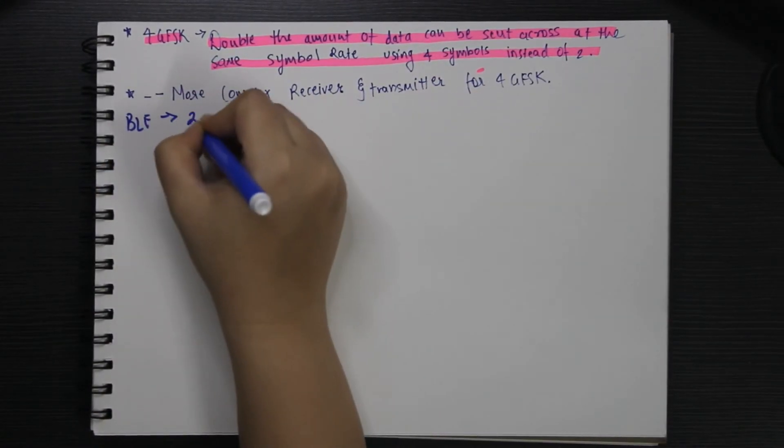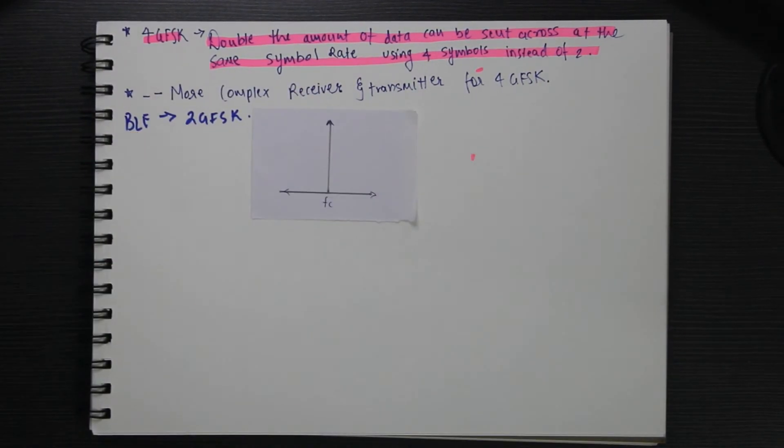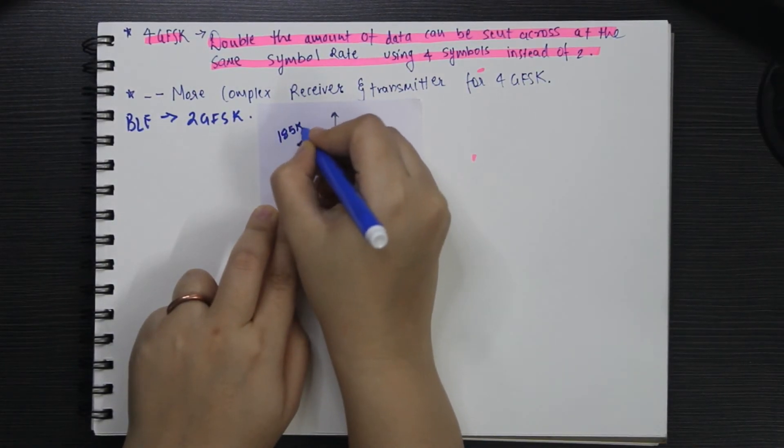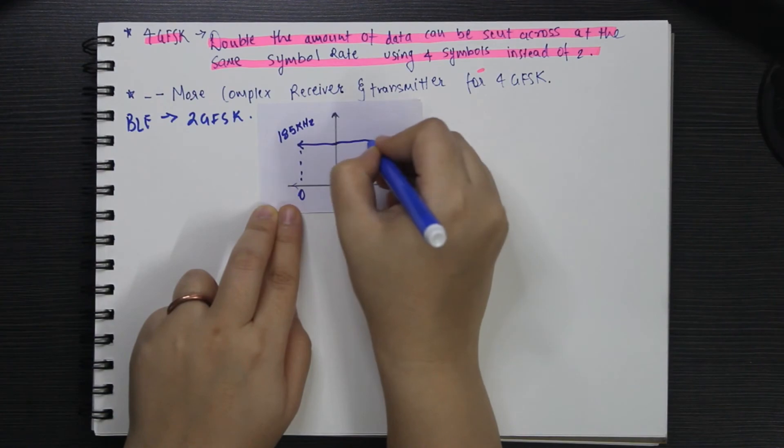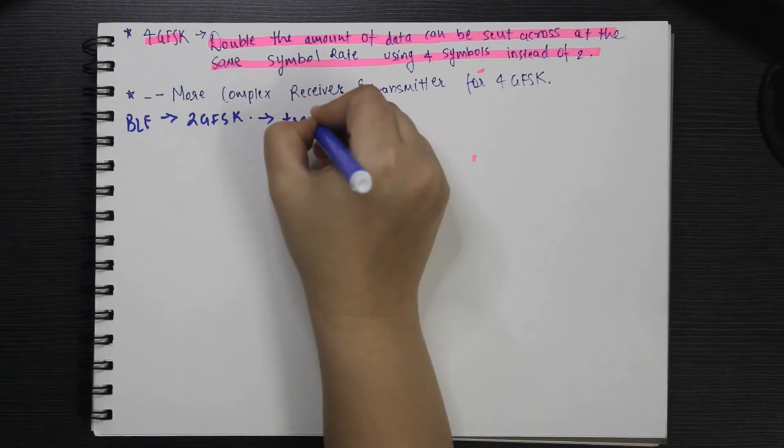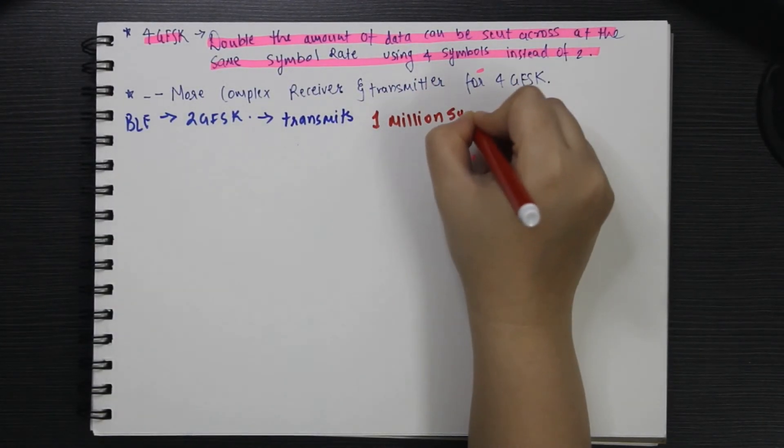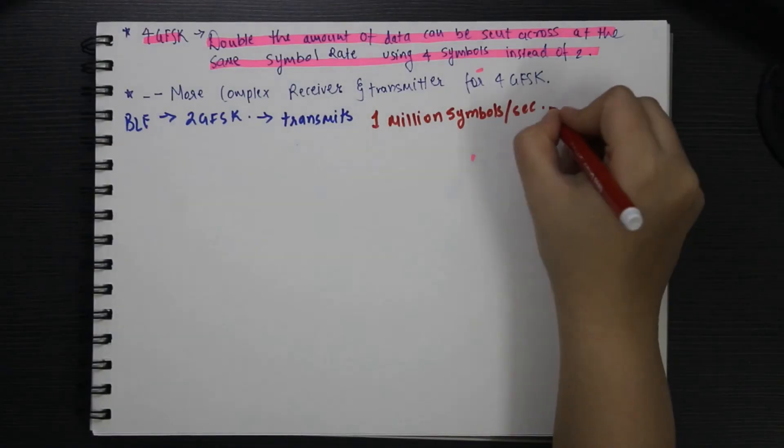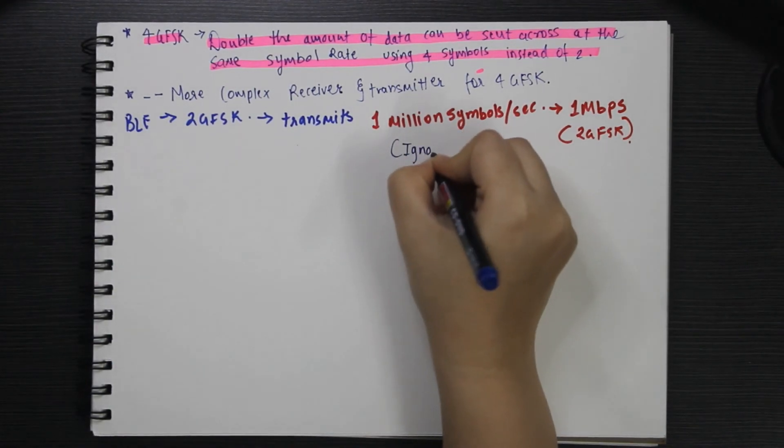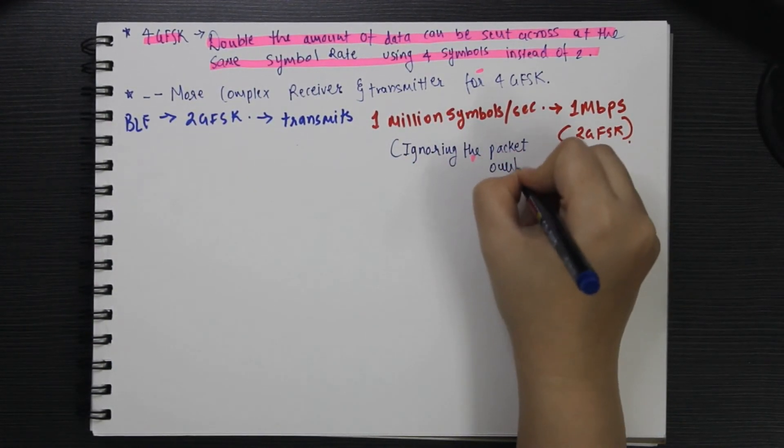In case of BLE specifically, 2GFSK or binary GFSK is used where a 0 is encoded to negative frequency deviation of at least 185 kHz and 1 is coded to positive frequency deviation of at least the same amount. At just the physical layer, BLE is capable of transmitting 1 million symbols per second. This translates to 1 Mbps, assuming an encoding of 1 bit per symbol, which is the standard for BLE.